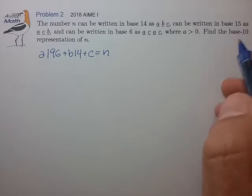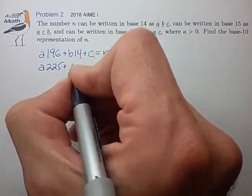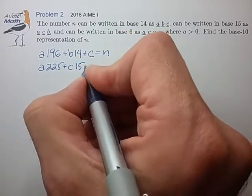For the base 15 number, a times 15 squared plus c times 15 plus b. That's the second way to express n.